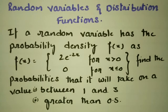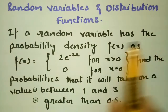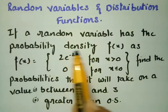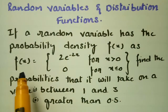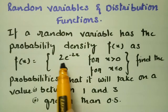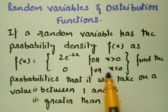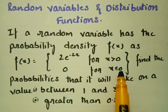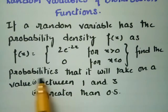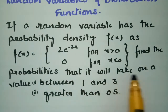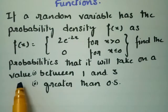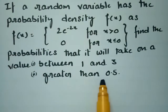In this video I am going to explain a problem from random variables and distribution functions. If a random variable has the probability density f(x) equal to 2e^(-2x) for x positive, and 0 for x less than or equal to 0, find the probabilities that it will take on a value between 1 and 3, and greater than 0.5.